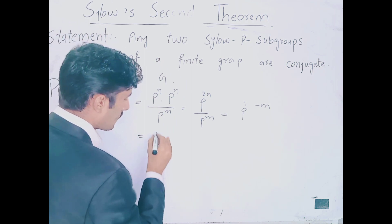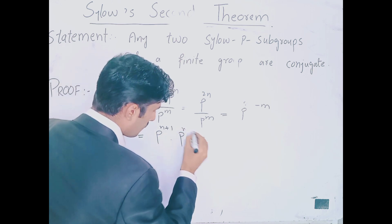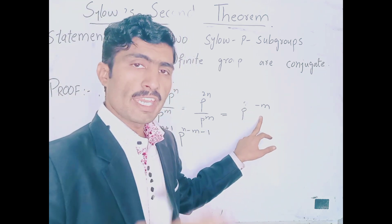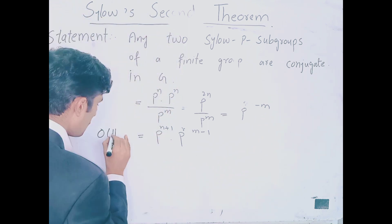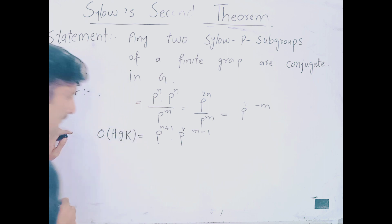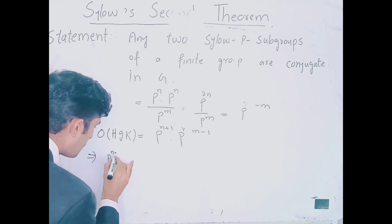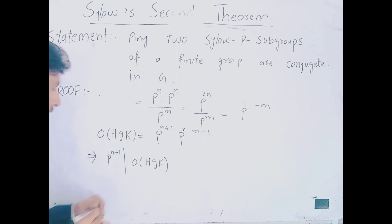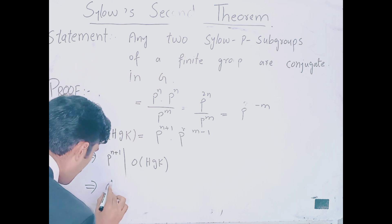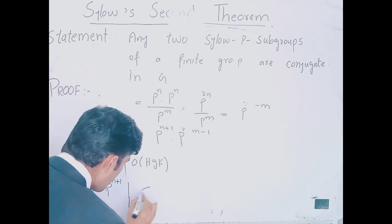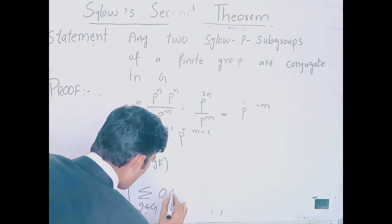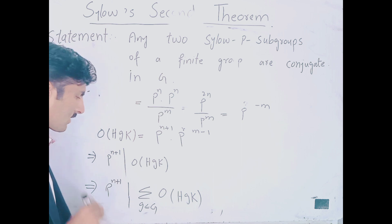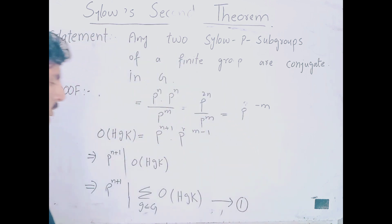تو order of HgK = P^N × P^N ÷ P^M = P^(2N−M). یہاں سے P^(N+1) × P^(N−M−1) آجائے گا۔ This implies that P^(N+1) divides order of HgK. اور sum over all g belonging to G of order of HgK بھی P^(N+1) divide کرے گا۔ یہ ہمارے پاس equation number 1 ہے۔